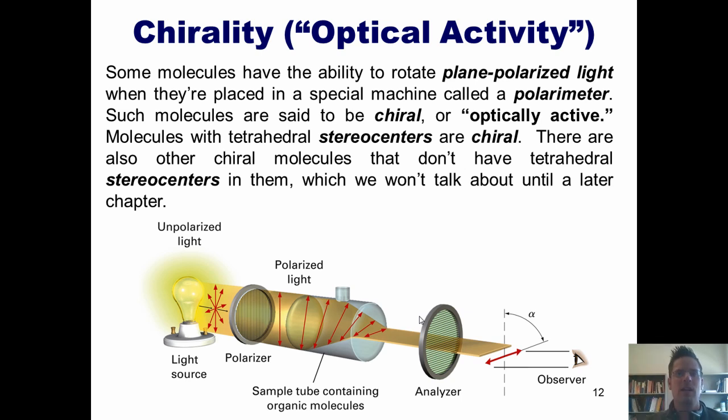I just want you to understand that there are certain molecules where if I dilute them and put them into a machine like this, the machine will fire plane polarized light at those molecules, and the molecules will rotate the light in one direction or the other.